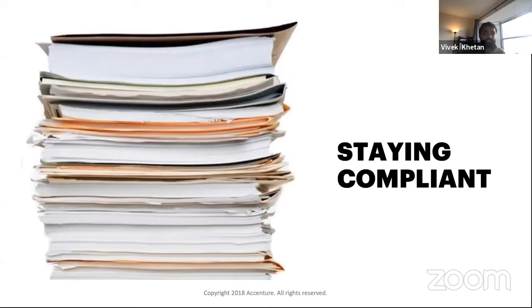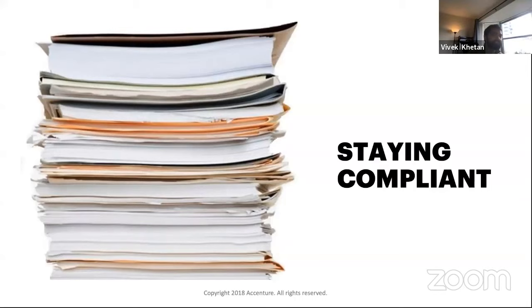The biggest challenge is that there are so many rules and they keep changing. Someone needs to read these documents line by line and understand them with domain knowledge. Yet banks are still paying $270 billion just to stay compliant, and ending up paying $100 billion or more in fees due to non-compliance. This is why knowledge graphs can be a good solution to this problem.